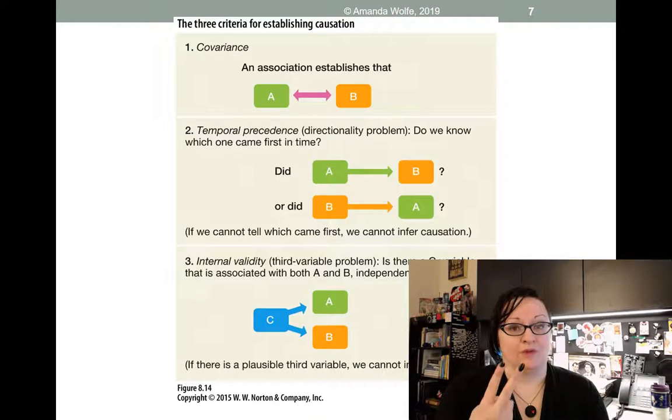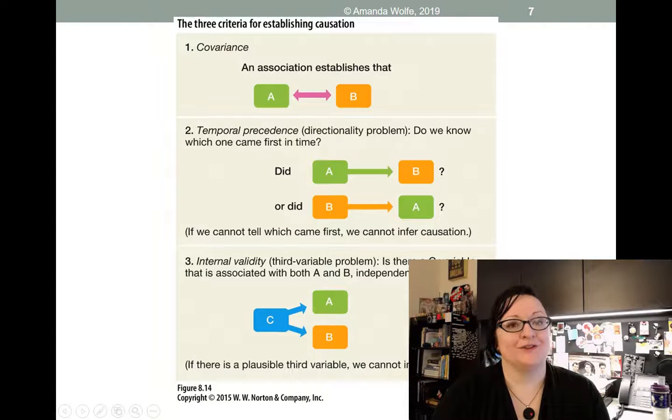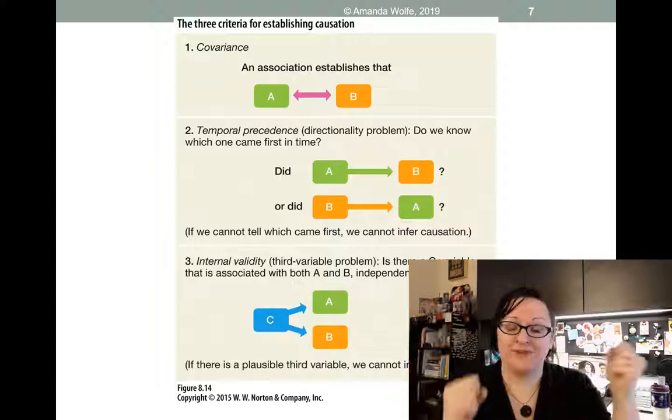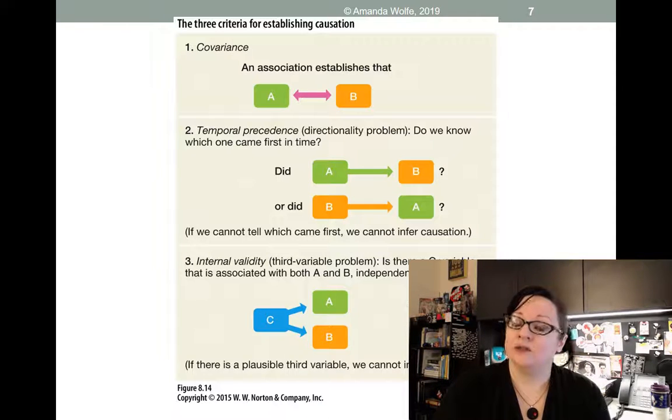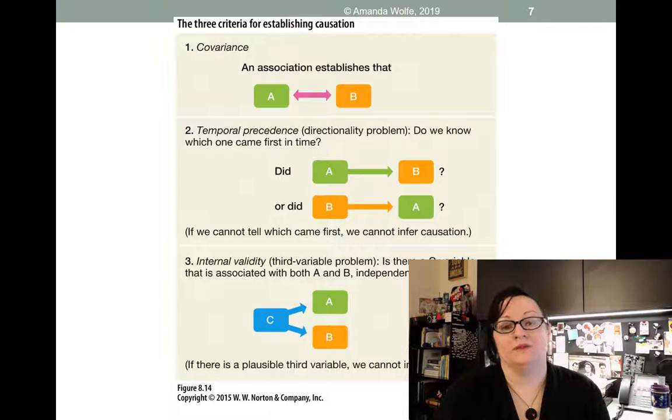The other two components are temporal precedence and internal validity. Those are the two parts that correlations don't have. A correlation only shows part one, that they co-vary. They're in a relationship with each other. But a cause and effect relationship also requires, for temporal precedence, that you know which one came first. The cause, of course, has to come first. In an association claim, you're just measuring both. And so because you're just measuring both, you don't know which one came first. But in a cause and effect relationship, you're manipulating one of the variables. And so you know that that's the one that came first.